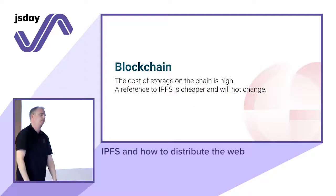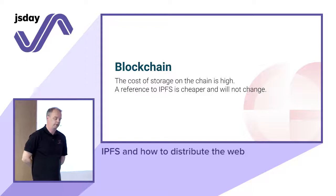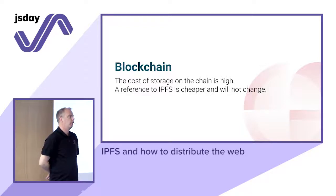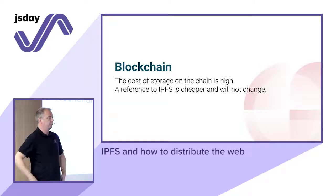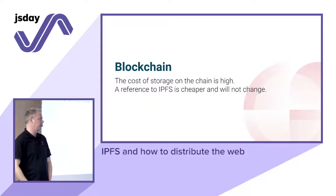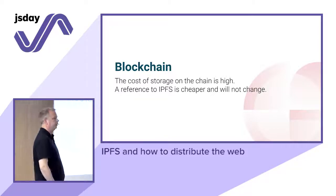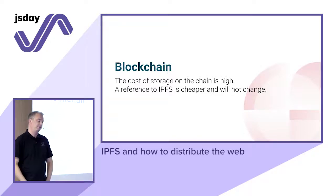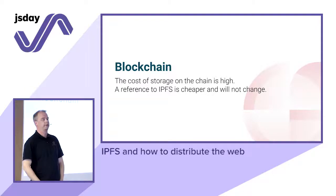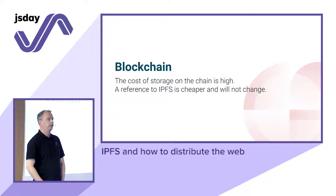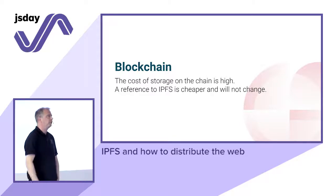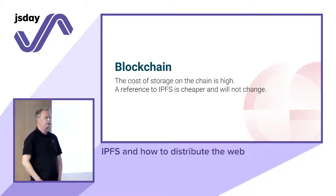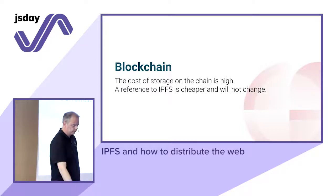The next thing is blockchain. One thing with Ethereum, for example, is that you can have contracts in the blockchain, and it's possible to store a reference to some data in the blockchain. That costs gas, so you want it to be as small as possible. An IPFS reference hash is actually a cheap thing to store, and it also has a nice property that it will never change — it will never be different from what it was in the beginning. So that's really nice for contracts. Ethereum is actually working on something called the Swarm, which is a similar thing to IPFS.